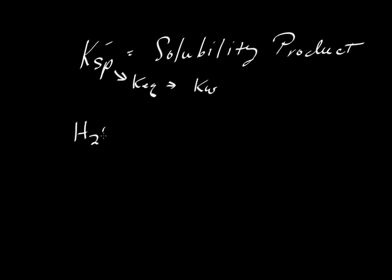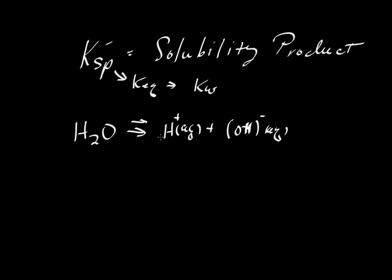For the case of water, if we have pure water and it dissociates to form hydrogen ion in aqueous solution plus hydroxyl ion also in aqueous solution — that is an OH⁻ — we can ask how far will this reaction go? How much hydrogen ion and hydroxyl ion will we get out of any given amount of H₂O? One mole of water will give us one mole of hydrogen and one mole of hydroxyl, so since we're getting equal moles of each, if we know the concentration of one, we know the concentration of the other — these will be the same.